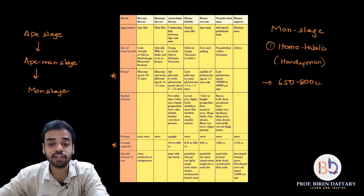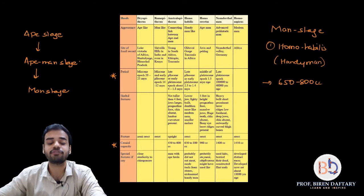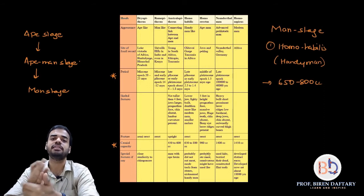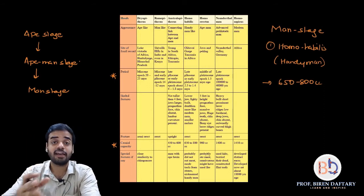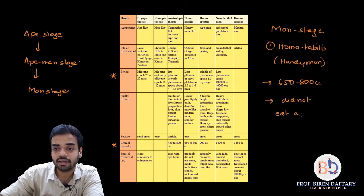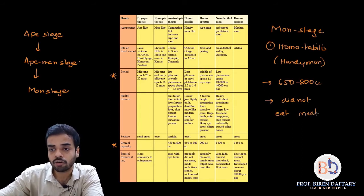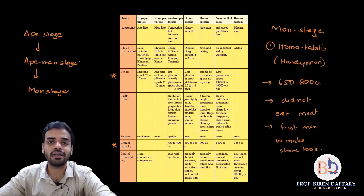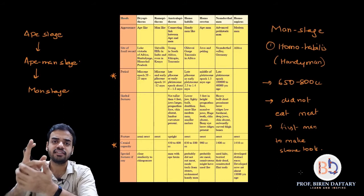Homo habilis posture is erect/upright. Cranial capacity is 650 to 800 cubic centimeters — an increase from Australopithecus. Special features: probably did not eat meat, and most importantly made tools from stones, earning the name handyman. This is the most important thing to remember about Homo habilis.